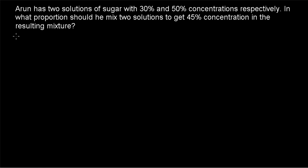Hi friends, welcome to today's class. Today's first question is: Arun has two solutions of sugar with 30% and 50% concentrations respectively. In what proportion should he mix the two solutions to get 45% concentration in the resulting mixture?